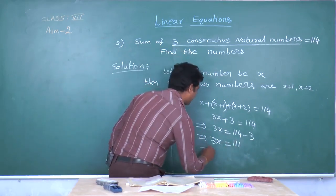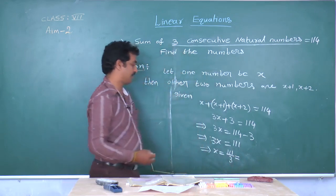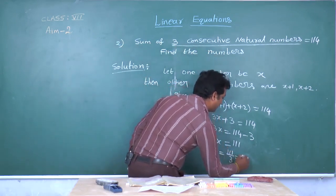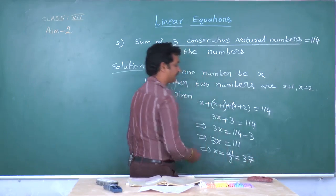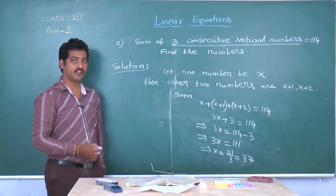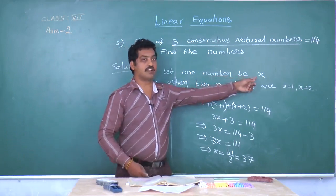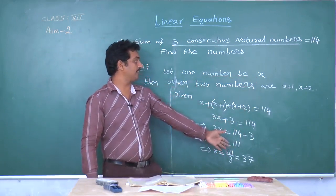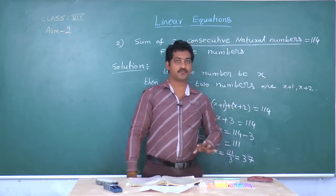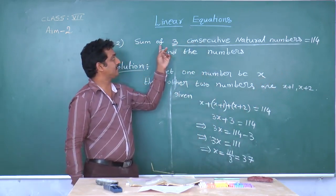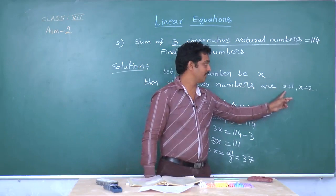That implies x equals 111 divided by 3. Since 3 sevens are 21 and 3 threes are 9, x equals 37. Therefore one number equals 37, and the other two numbers are 37 plus 1 and 37 plus 2, which are 38 and 39. Therefore those three consecutive natural numbers are 37, 38, and 39.